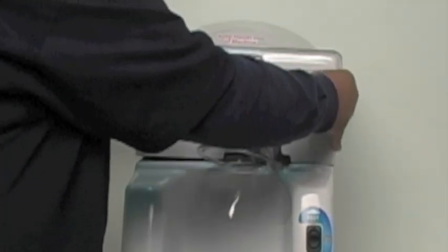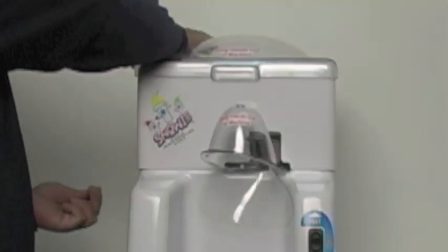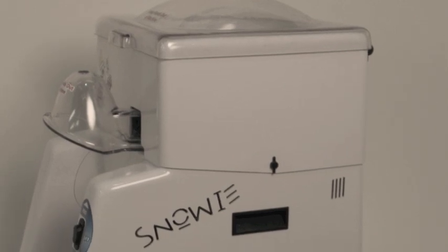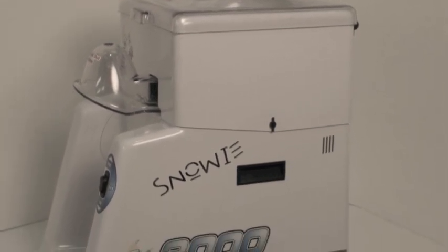Gently place the ice hopper back on the motor housing and align the holes for the screw. Insert and tighten the three black thumb screws to secure the ice hopper and motor housing together. You are now ready to power up and use the Snowy 3000 shaver.